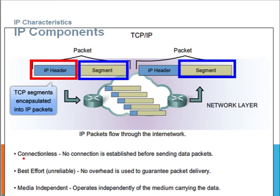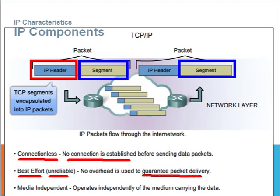In general, the IP connection is connectionless, meaning that no connection is established before sending the data packet. This is what we call a best effort transmission, which is unreliable because there is no guarantee and no way to guarantee packet delivery. Finally, it is independent of the media, meaning it can travel through an Ethernet wire or through a Wi-Fi network.